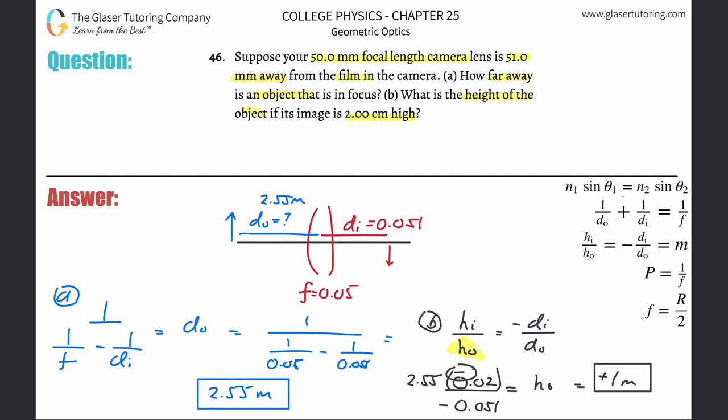So just leave it as positive if you want. The height is one meter. Notice that the image is smaller - you can calculate the magnification if you want. I think that's it for this one. Check out more of our videos - we got a whole bunch of other subjects out there for you.